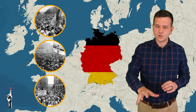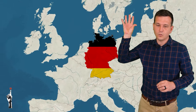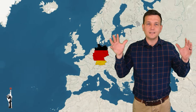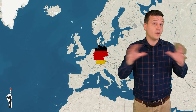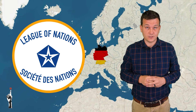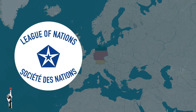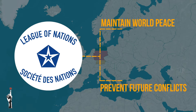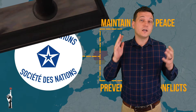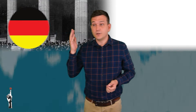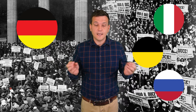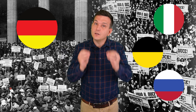Let's zoom away from Germany and look at the political landscape outside of Germany. After World War One, the League of Nations was established to maintain world peace and prevent future conflicts. The League of Nations failed. Germany's political landscape was unstable, and many other countries' political landscapes were also unstable, and in this time totalitarian regimes rose.